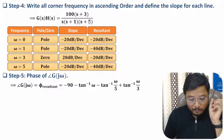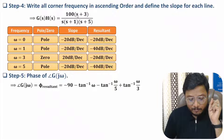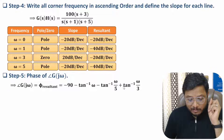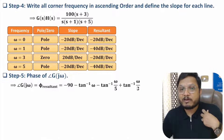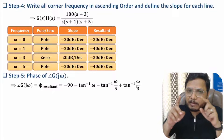For the pole at s = −5, the contribution is −tan⁻¹(ω/5). For the zero at s = −3, substituting s = jω gives a positive angle contribution of +tan⁻¹(ω/3). So the complete phase equation is: φ = −90° − tan⁻¹(ω) − tan⁻¹(ω/5) + tan⁻¹(ω/3). Once you have this phase equation you can make a table of phase values.